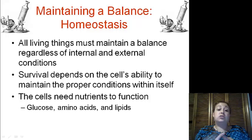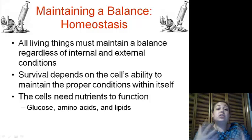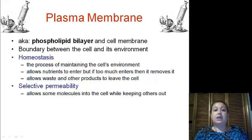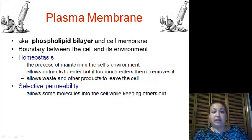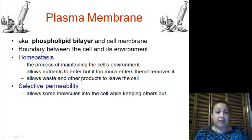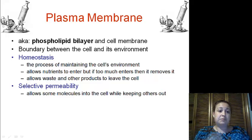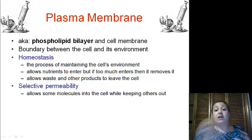It needs glucose, it needs amino acids, lipids, to actually build and keep its function going. Now, the plasma membrane, also known as the phospholipid bilayer, and also known as the cell membrane — so three names — is the boundary between the inside of the cell and its external environment.